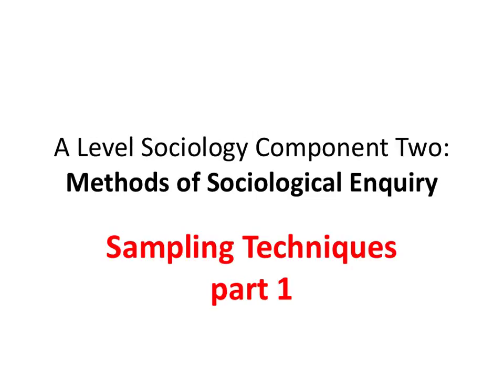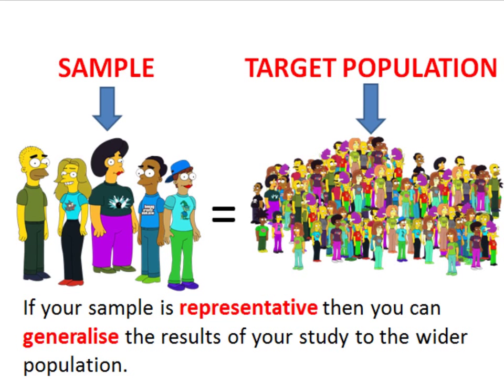Welcome back to another Component 2 screencast. This is the first of two short videos looking at sampling techniques in sociological research. Now in sociological research, the group that we're researching is called our target population, and it's usually not practical to do research on every single individual within the target population. Normally we won't have the time or the resources to be able to do that.